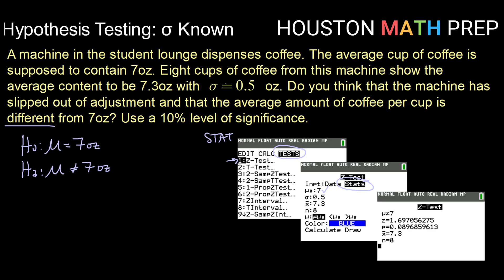Your sigma is your population standard deviation here, given as 0.5. X bar is the mean of your sample, so in this case that would be 7.3. N is the number in your sample, so we sampled eight cups of coffee. And then here we need to tell it what kind of test. So look at your alternative hypothesis. We have a not equal, so we're going to select that option and go down to calculate and hit enter.